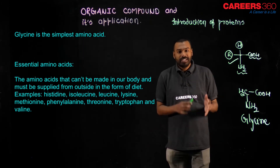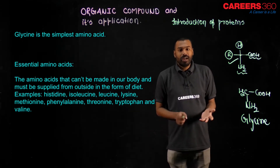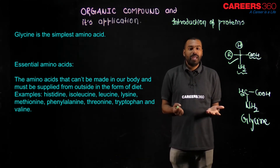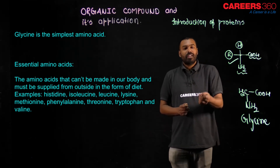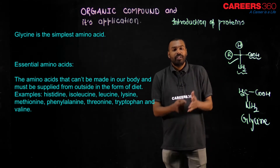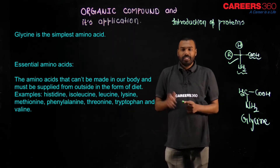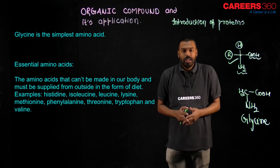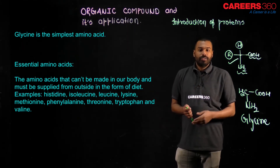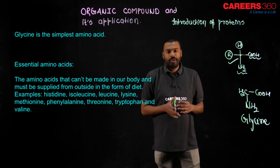Non-essential amino acids are those our body can produce on its own. Essential amino acids must be supplied from outside as diet or supplement. Examples of essential amino acids include threonine, isoleucine, leucine, lysine, and methionine — these are the important essential amino acids our body demands from diet.